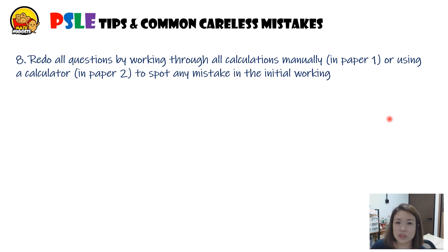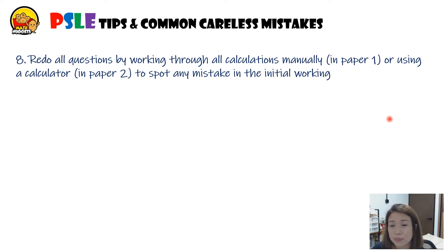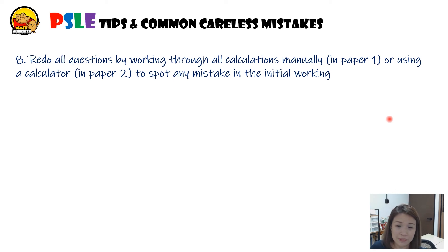While checking, redo all the questions by working through your calculations. For paper one, work through all the calculations again manually. For paper two, work through all the questions and calculations to spot any mistakes.